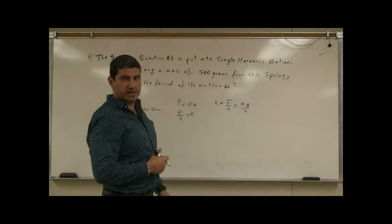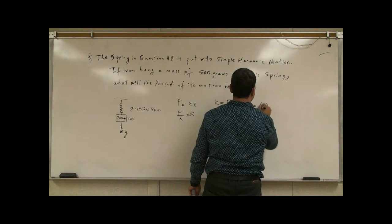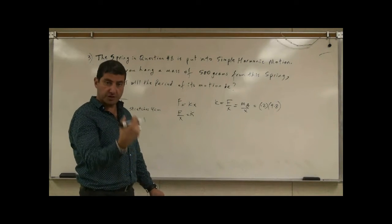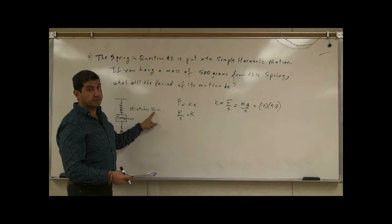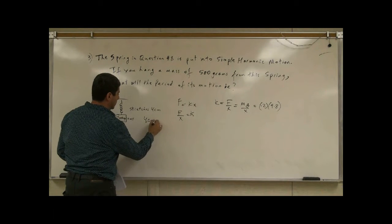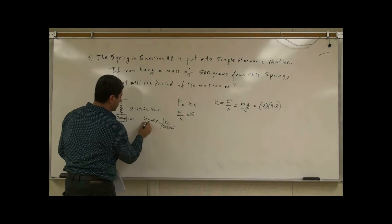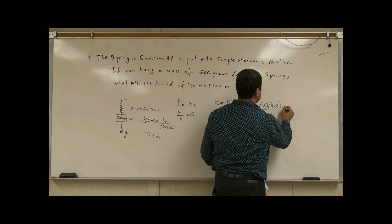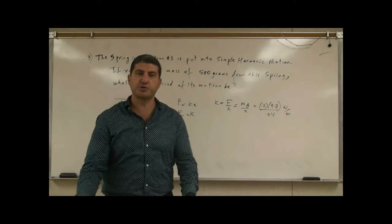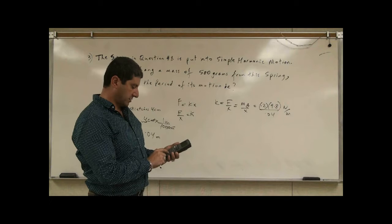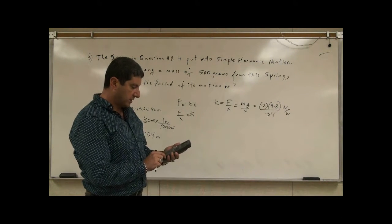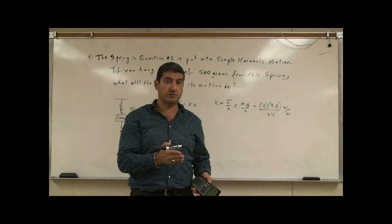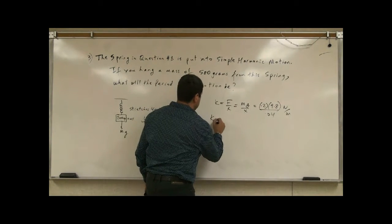So how do we convert that to kilograms? 200 divided by 1,000 is 0.2. Then we multiply that by 9.8, gravity, and that gives us newtons. Then we divide by how much the spring stretched. The spring stretched four centimeters — convert four centimeters to meters by dividing by 100, giving 0.04 meters. So the units will be newtons per meter. 0.2 times 9.8 divided by 0.04 gives us 49 newtons per meter, which was the answer in that multiple choice problem.